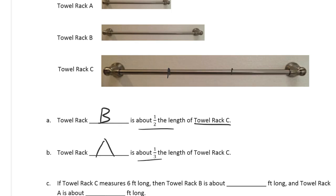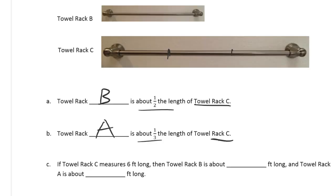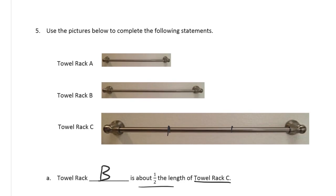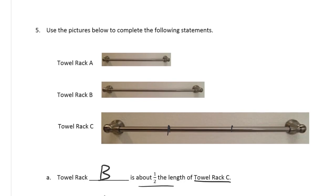Because if it takes three of these to make one of these, then that's a third. And if it takes two B's to make a C, then B is half of C.